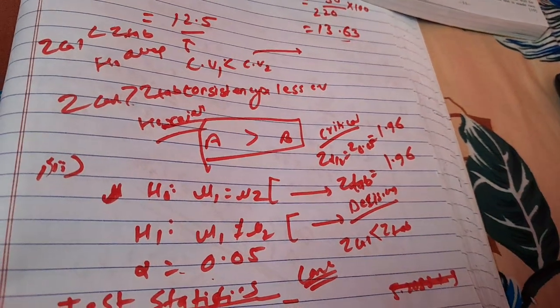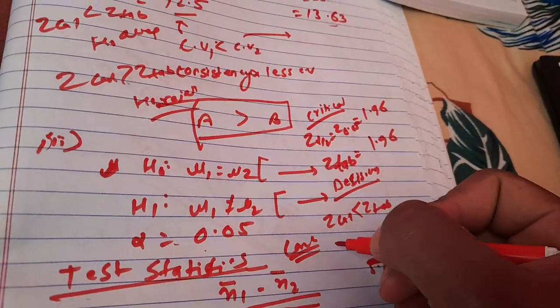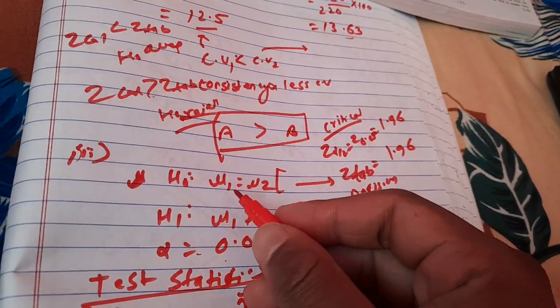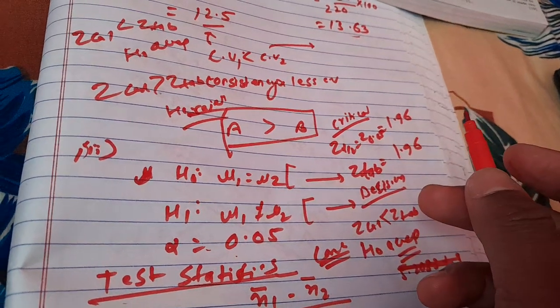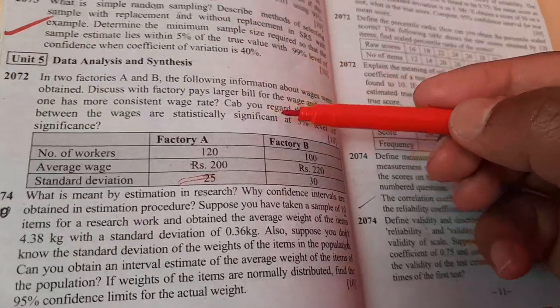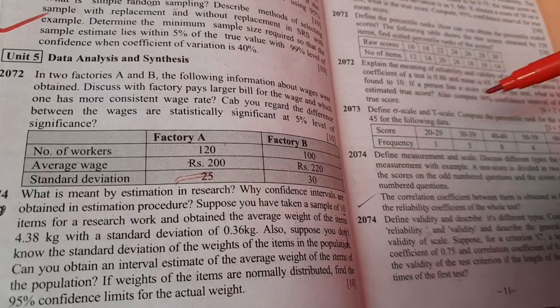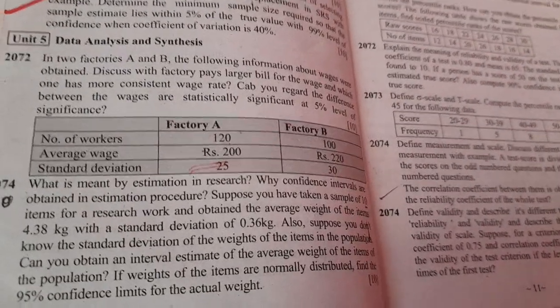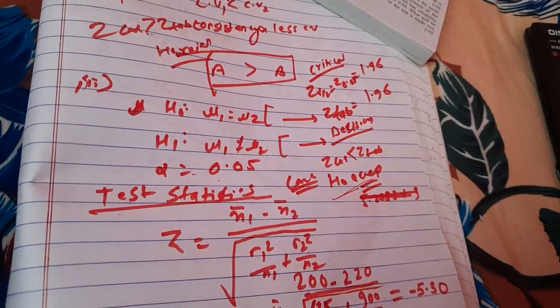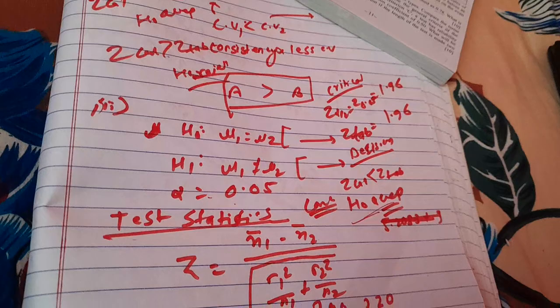Since Z calculated is less than Z tabulated, we accept H0: μ1 = μ2. This means the difference between the wages is not statistically significant at the 5% level of significance. Thank you for watching this video. Have a nice day.